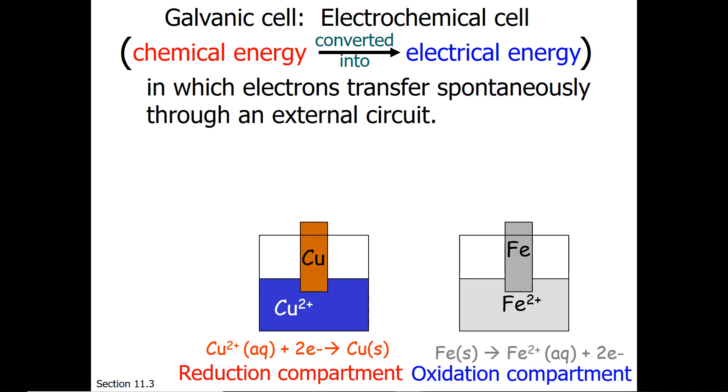They also have an oxidation compartment, and this is where the oxidation half reaction occurs. For the spontaneous reaction, we're going to start with high energy electrons that belong to iron, and low energy vacancies that belong to copper 2+.